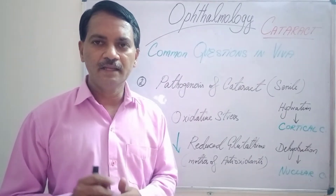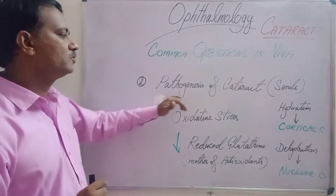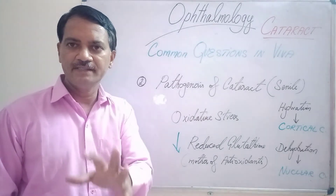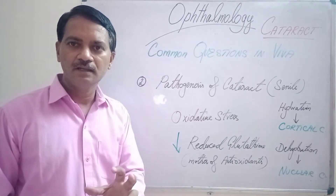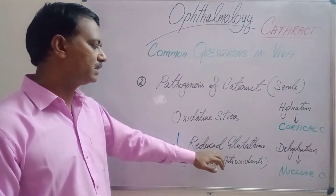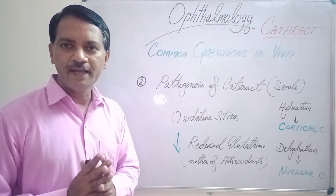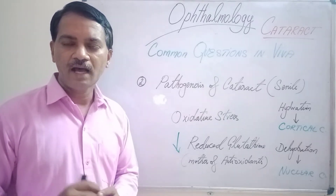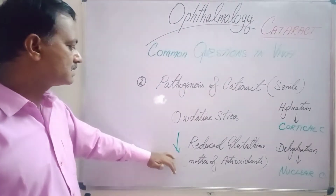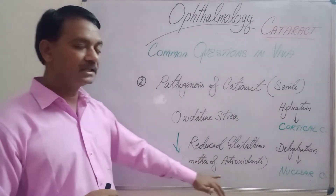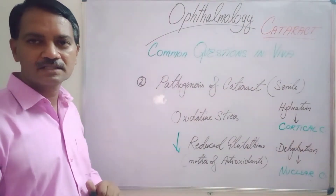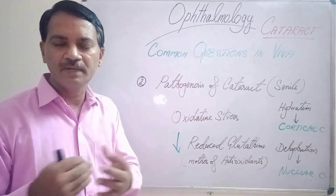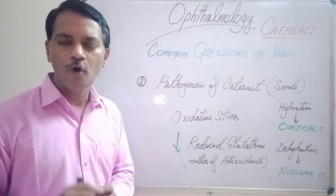The next common question a student should know is: what is the pathogenesis of senile cataract? It is mainly due to the oxidative stress caused by aging. Normally, in a young person, there will be more amount of reduced glutathione inside the lens, which will fight the free radicals and oxidants to keep the lens clear and transparent. As age increases, due to several factors, this reduced glutathione — called the mother of antioxidants — decreases in concentration inside the lens, so the lens is not able to tolerate damage caused by free radicals and oxidants, leading to opacity of its matter.